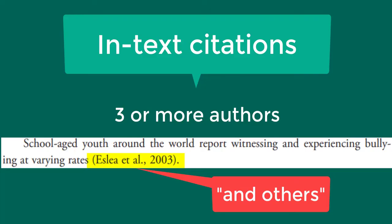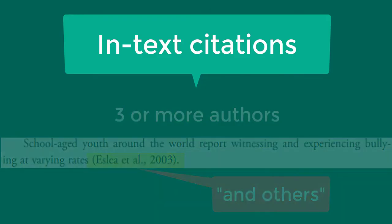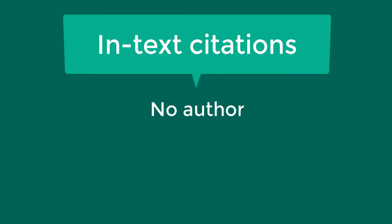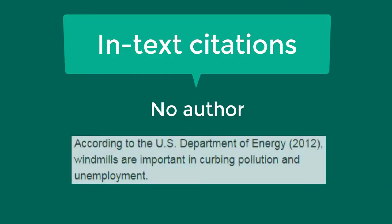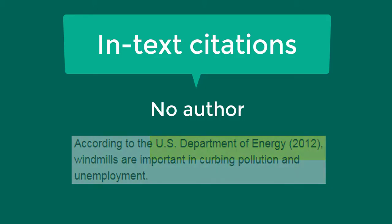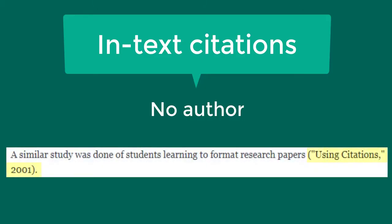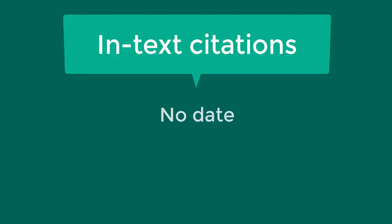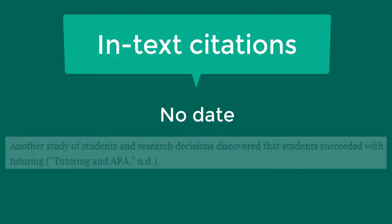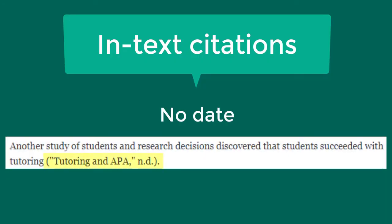If the material you are citing has no author, you might use the organization as the author. For example, your resource might be written by a government agency. Depending on the resource, you could also use the material title in place of the author. Also, if the material you are citing has no date, such as some web pages, use the abbreviation 'n.d.' for no date in place of the year.